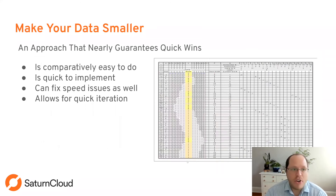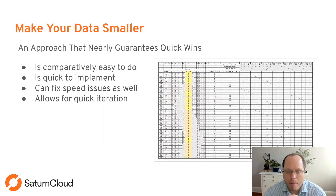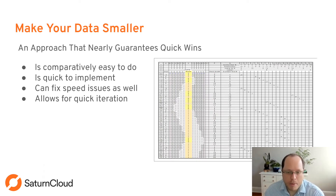As an overview: making your data smaller pretty much always guarantees quick wins, it's comparatively easy to do and quick to implement. It also fixes speed issues, and most importantly, it allows for quick model iteration. If you can run a model in a couple of seconds just to test whether the data yields useful results, you'll be in a much better position when you apply the full dataset.